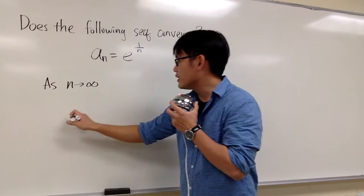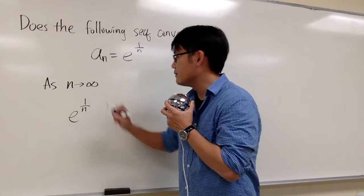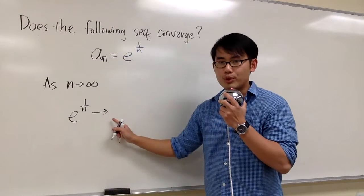And then I'll put down the expression, which is e to the 1 over n, and I'm going to draw arrows. The arrow means approaches.